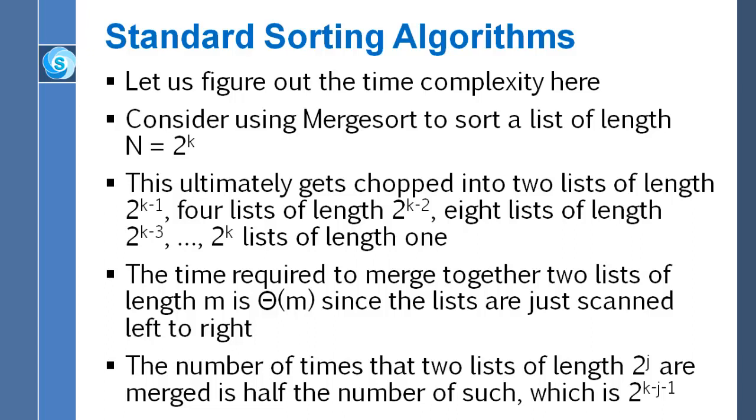Well, we saw that there were four lists of length two to the k minus two. There are eight lists of length two to the k minus three. Eight is the same as two to the third. There are two to the third lists of length two to the k minus three. So if you think about that, how many lists are there of length two to the j? And the answer is two to the k minus j.